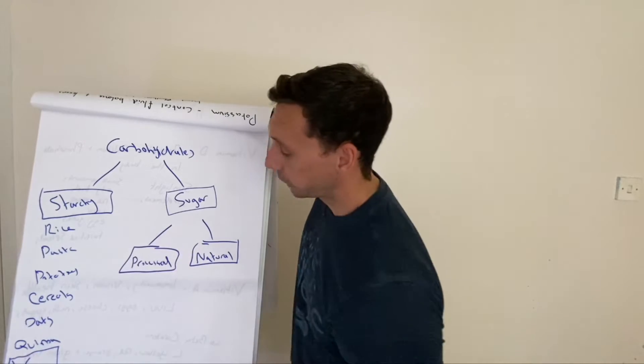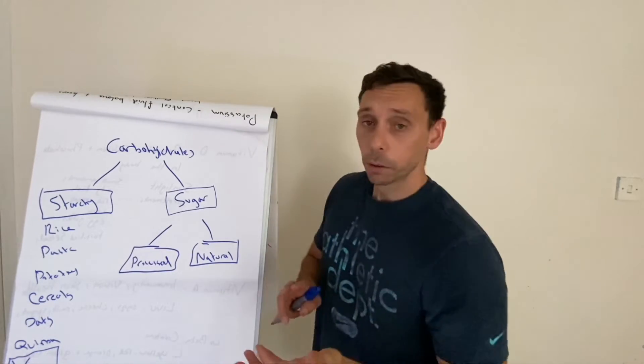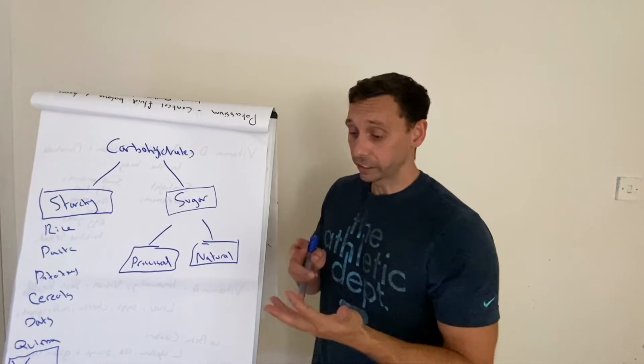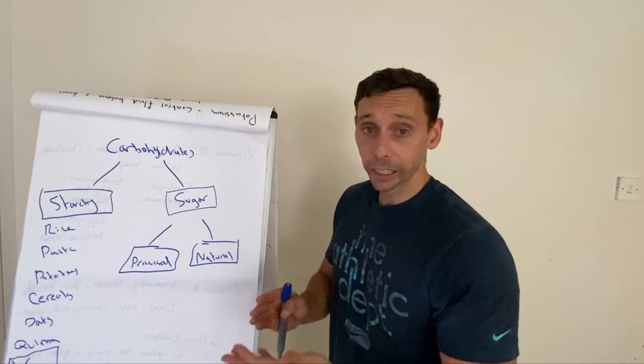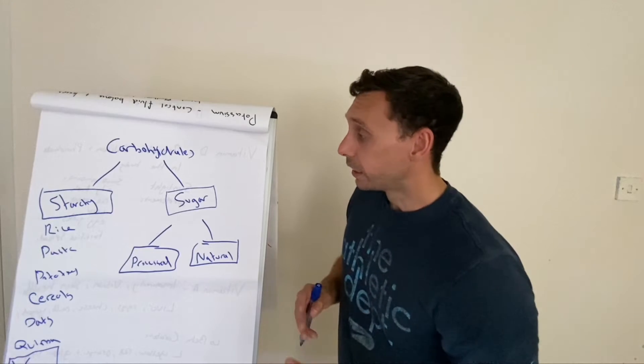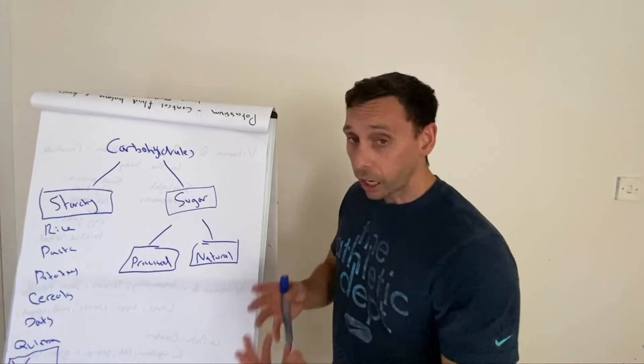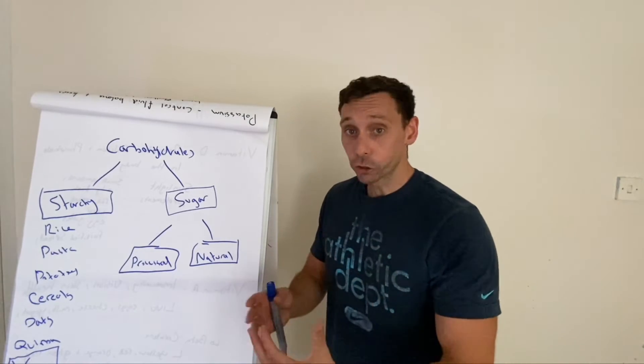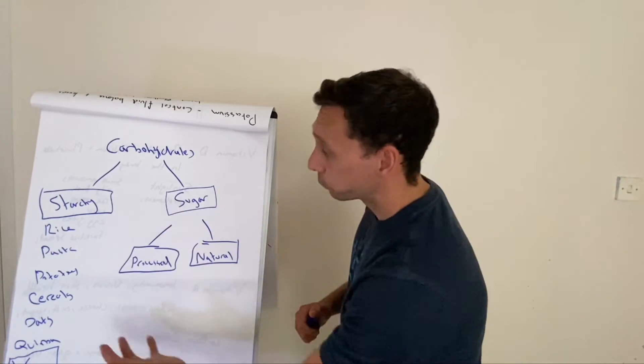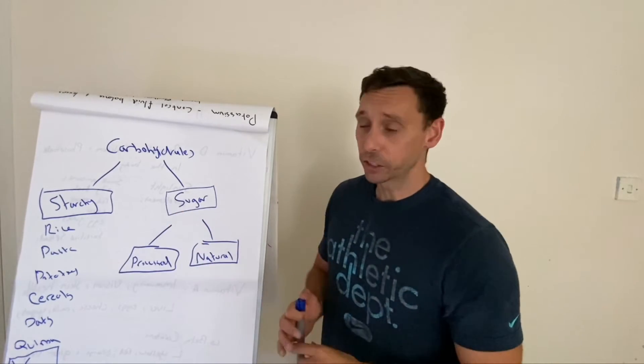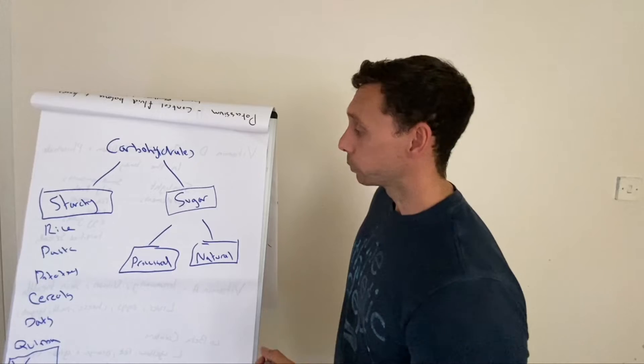Other starchy carbohydrates include bread, and anything that comes from bread, like breadcrumbs, pastry, pies, et cetera. All of those foods can affect your blood glucose levels.